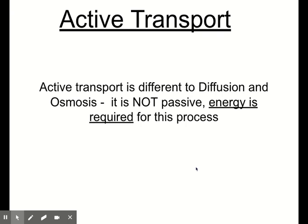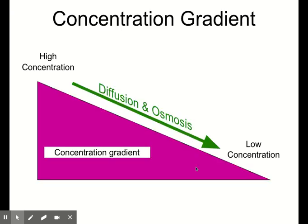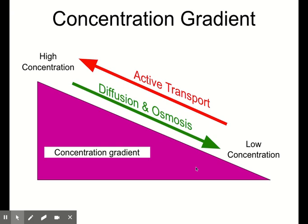With active transport, the main difference is that energy is required for this process. With passive transport like diffusion and osmosis, molecules move from high to low, down a concentration gradient. But with active transport, molecules move from low to a high concentration, so we can't say it's going down the concentration gradient anymore. However, it's important we don't say that active transport goes up the concentration gradient — that's not correct. What we see is that it goes against the concentration gradient.